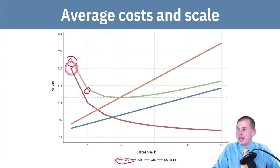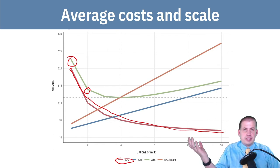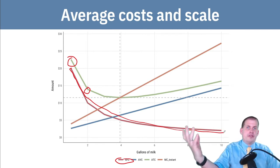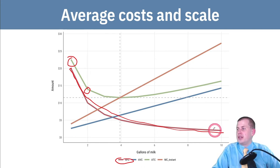That decrease is driven by the fixed costs. If you look at the red line, as you make more stuff, your fixed costs go down significantly because you're still using the same factory. In the situation of this milk, you're using one fridge to store all of the milk, so you don't have to buy a second one — your fixed costs are going to go down over time.